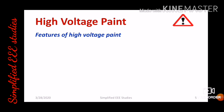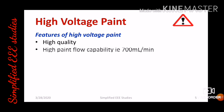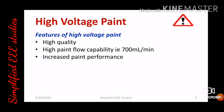Let us discuss the salient features of high voltage painting. Compared to conventional painting, the high voltage painting system performs at very high quality — it ensures a high quality painting system. The paint flow capability is in the range of 700 milliliters per minute, meaning the painting is done very fast — much faster than conventional painting. It also provides increased painting performance. Another advantage is that the finishing is very fine; excellent finishing takes place.